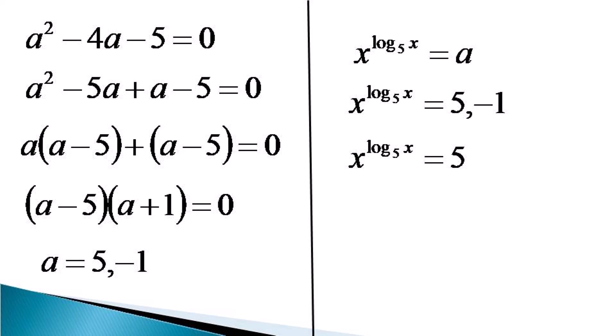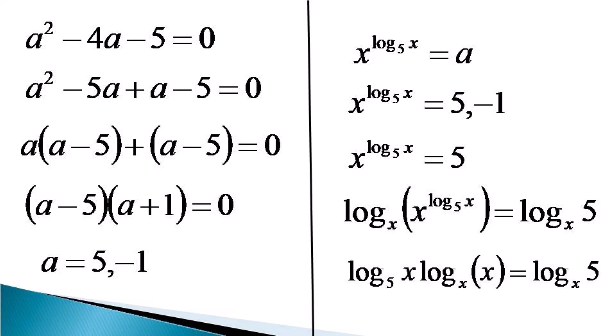Now, again we take log of both the sides to the base x to find the right hand side to become equal to log 5 to the base x and on the left hand side we take the log x to the base 5 in the powers to the multiplication form of the log.